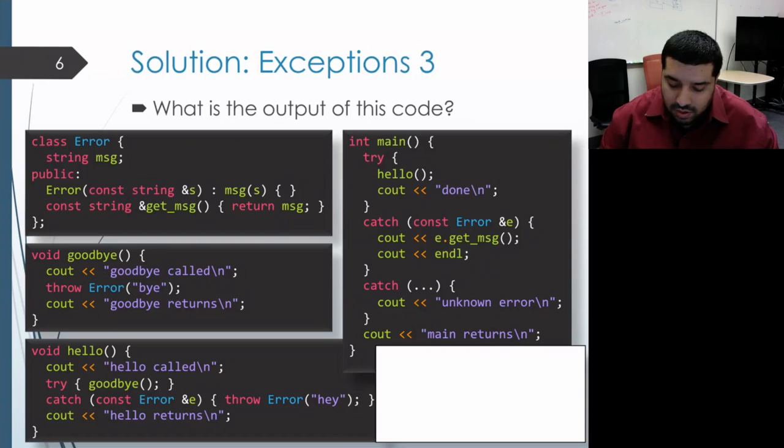Alright, as is usual, the program starts by calling main, and so we get an activation record for main on our call stack.